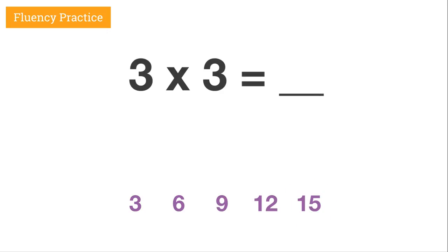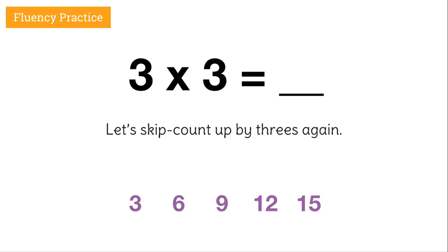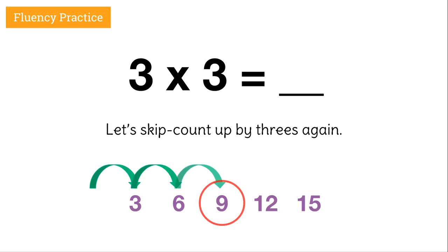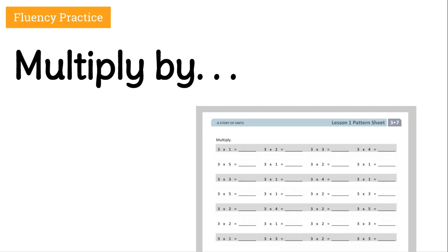Now if I have three times three, let's skip count by threes again: three, six, nine. Three times three equals nine. Now that you're warmed up, it's time for our multiply-by sheet.